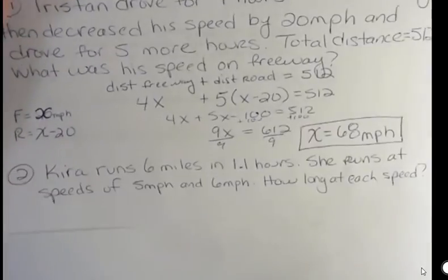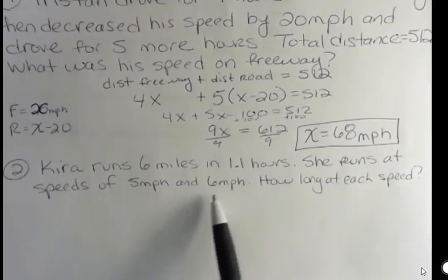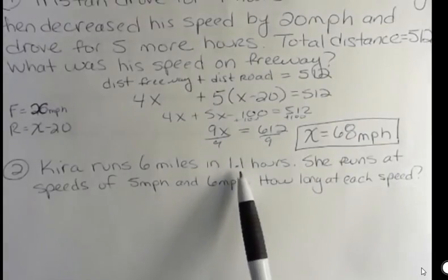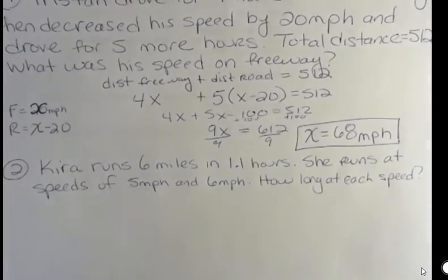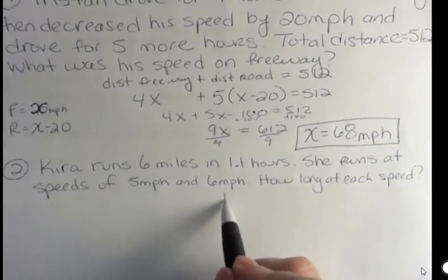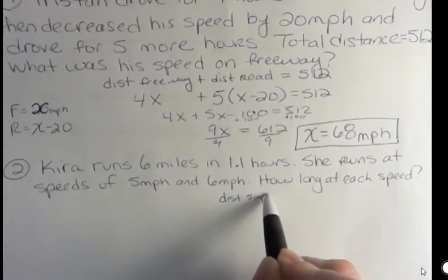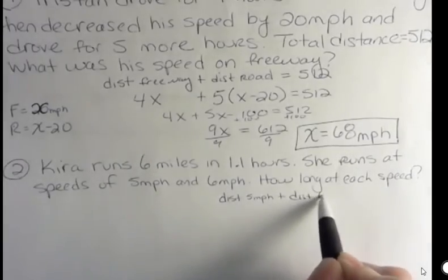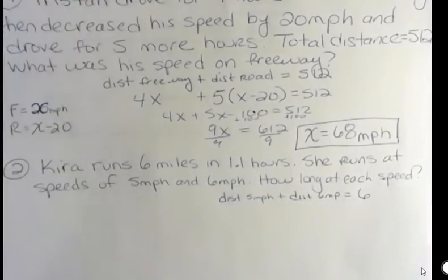Next problem. We have three of them here. Kira runs six miles in 1.1 hours. She runs at speeds of 5 miles per hour and 6 miles per hour. How long did she run at each speed? Well, we know she didn't run at 6 miles per hour the whole time or else she would have finished in exactly one hour, right? She had some time at 5 and sometimes at 6. This is a little trickier, but I think we can agree that her distance at 5 miles per hour plus her distance at 6 miles per hour adds up to 6 miles.